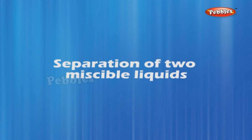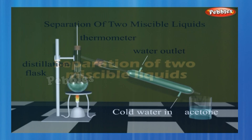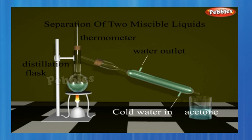Let us try to separate acetone and water from their mixture. Take the mixture in a distillation flask fitted with a thermometer. Arrange the apparatus as shown in the figure and heat the mixture slowly, keeping a close watch on the thermometer. The acetone vaporizes and condenses in the condenser outlet, while water is left behind in the distillation flask. This method illustrates the separation of two miscible liquids by distillation.